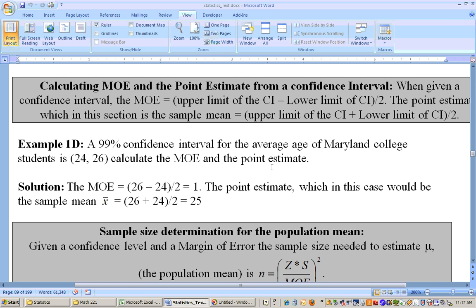Well, let's find the margin of error and the point estimate. To find the margin of error, you would take these two and subtract them, then divide by 2, and you'll get 1, that would be the margin of error.